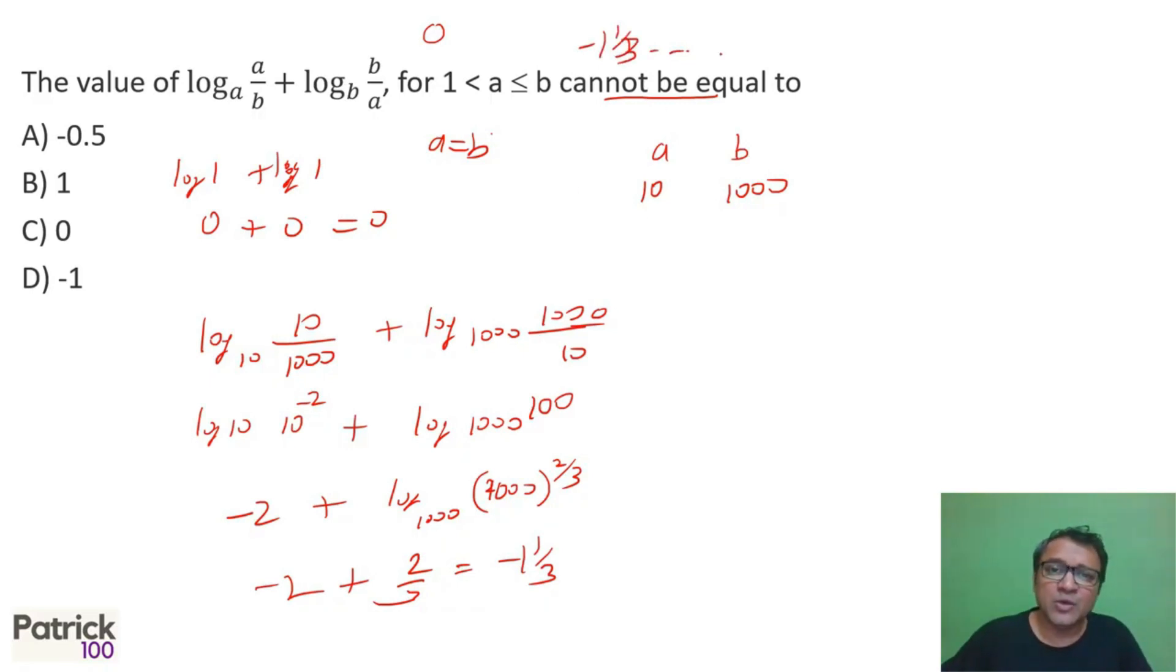Because I think 1000, maybe you take bigger value, it will go to more negatives. So at least all the values between these are possible, which means minus 0.5 and minus 1 should also be possible. So what it cannot be equal to should be B option. I know 0 is possible. I know minus 0.5 and minus 1 is possible because at minimum I'm getting 0. At high I'm getting minus 1 upon 3. So somewhere all the values between that should be possible. So what doesn't come in the range is 1. That is the answer.